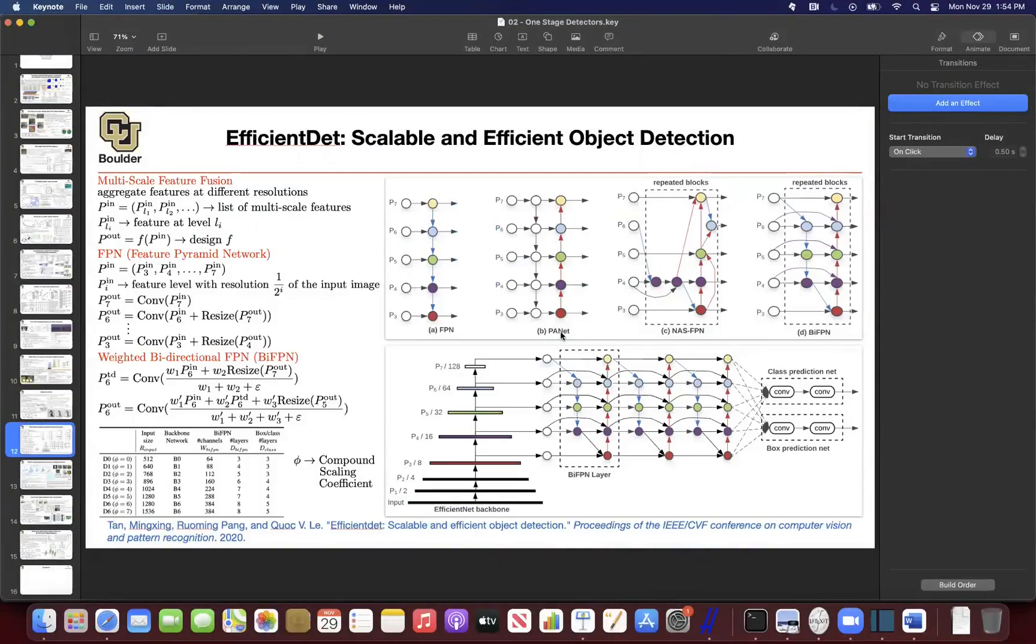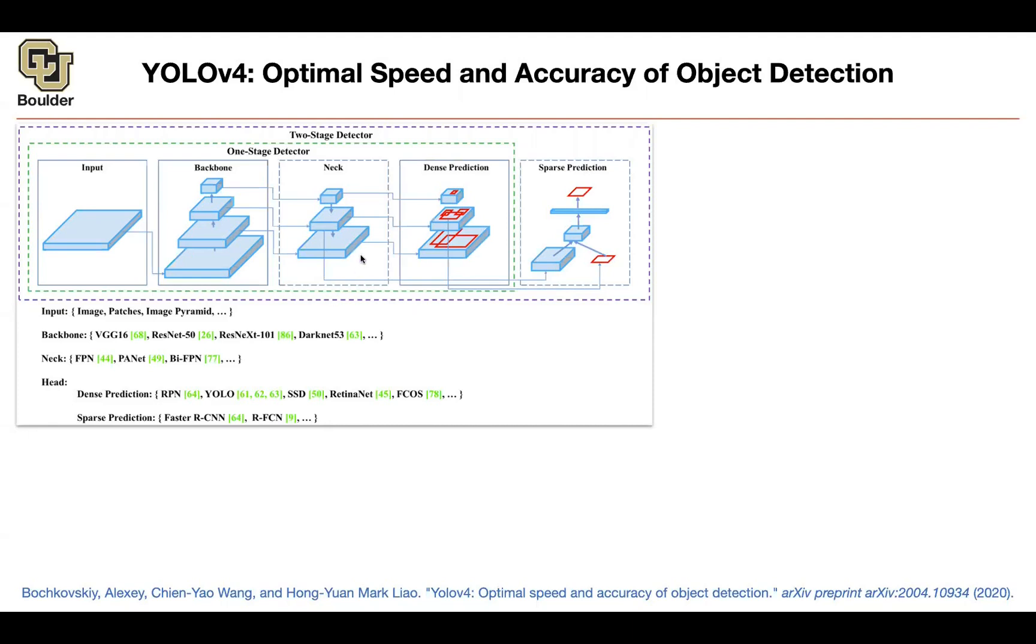This is PANet, which not only are going from top to bottom, you're also going from bottom to top. And then this is BiFPN that we learned last session. And then what else?